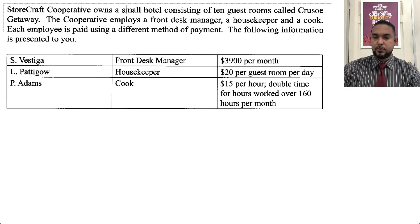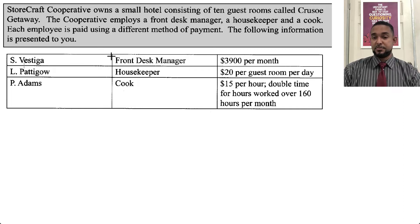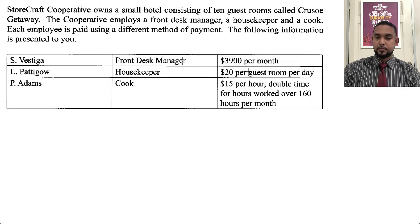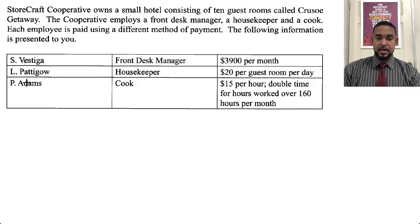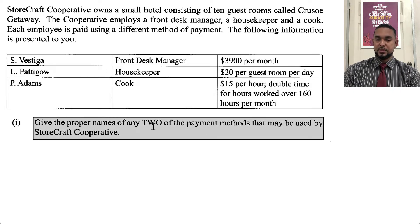Storecraft Cooperative owns a small hotel consisting of 10 guest rooms called Crusoe Getaway. The cooperative employs a front desk manager, a housekeeper, and a cook. Each employee is paid using a different payment method. S. Vestiger is the front desk manager and is paid $3,900 per month. El Patigal is the housekeeper and paid $20 per guest room per day. P. Adams is the cook at $15 per hour, with double time for hours worked over 160 hours per month. Part one asks you to give the proper names of any two of the payment methods used by Storecraft.